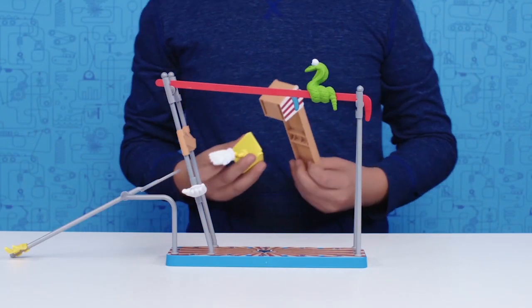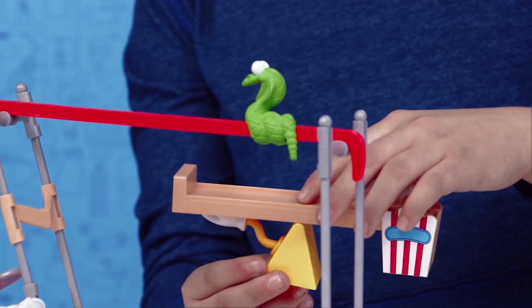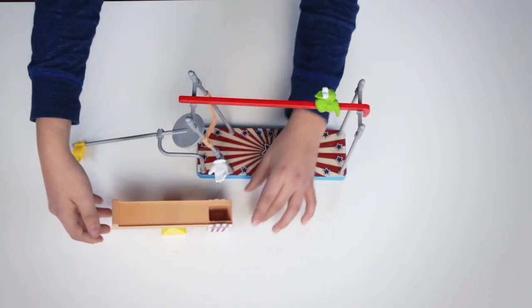Take the seesaw ramp and place it on the seesaw base. Place the seesaw ramp alongside the base just underneath the helping hand.